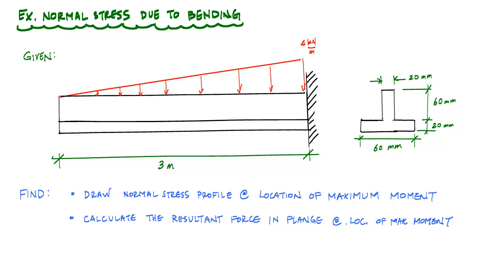The first thing we need to do is find what this maximum moment is and figure out where it is. So we want to draw the shear and moment diagram to locate where along the length of the beam the maximum moment occurs, because that's going to be associated with the maximum normal stress and it'll tell us which side of the cross-section — the top or the bottom — is in tension or compression.